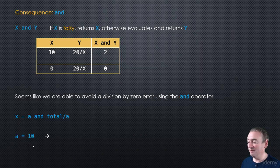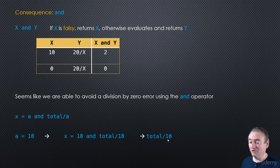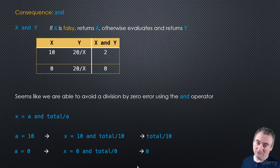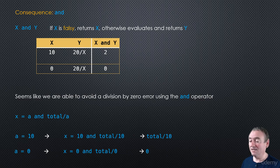A standard pattern is: x = a and total / a. If a is 10, that returns total / 10. But if a is 0, it returns 0 and avoids the division-by-zero error. That's a pretty standard trick that can be used in Python.